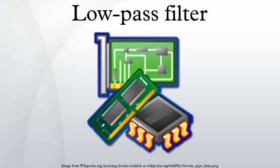That is, the change from one filter output to the next is proportional to the difference between the previous output and the next input. This exponential smoothing property matches the exponential decay seen in the continuous time system. As the time constant increases, the discrete time smoothing parameter decreases, and the output samples respond more slowly to a change in the input samples. The system has more inertia. This filter is an infinite impulse response single-pole low-pass filter.